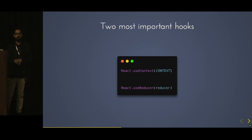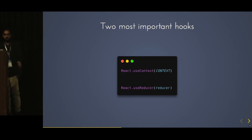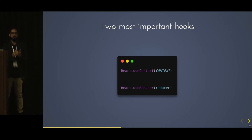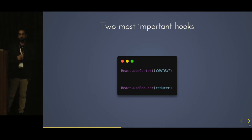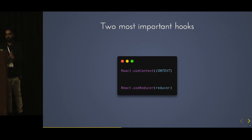Two most important hooks. Hooks give you a way to access features of a class-based component inside a function component — things like accessing or creating state, reading context, or using a reducer. They provide a much more composable and cleaner way of doing things, and the code becomes much smaller. The two important hooks we'll cover are useContext and useReducer. Note that hooks can only be used in functional components, not class-based components.